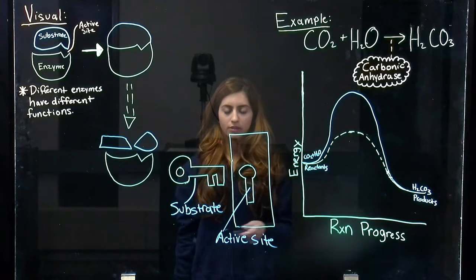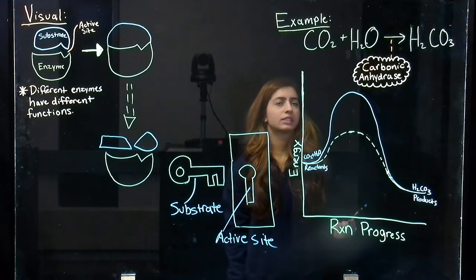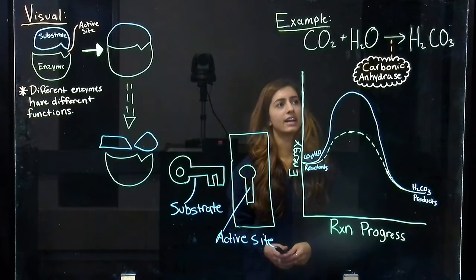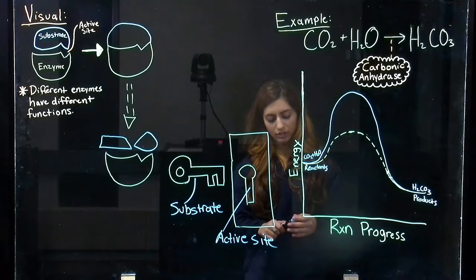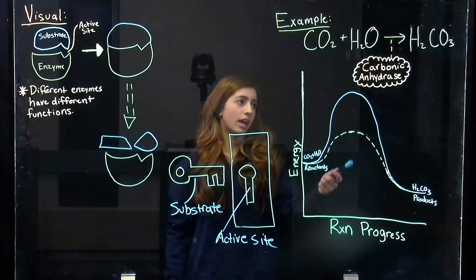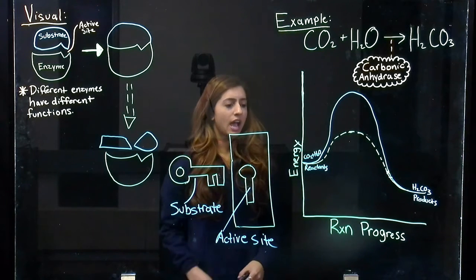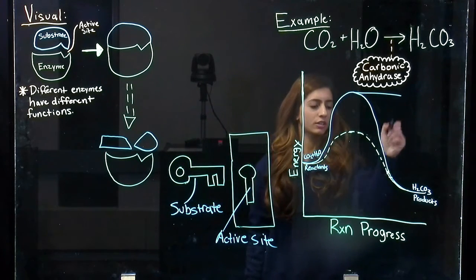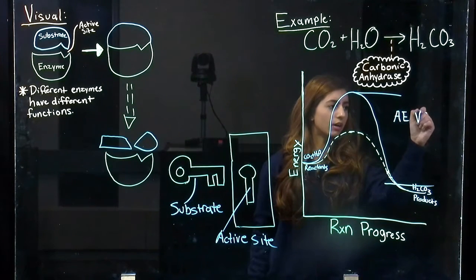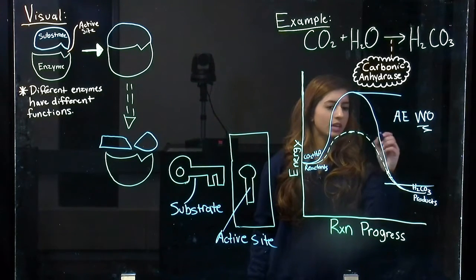A real-world example of this is a reaction of carbon dioxide plus water to give you carbonic acid. And this is actually a reaction that occurs in our blood to regulate our pH. And you can see the enzyme that is used is carbonic anhydrase. And you can see that the activation energy without the assistance of an enzyme is quite high.